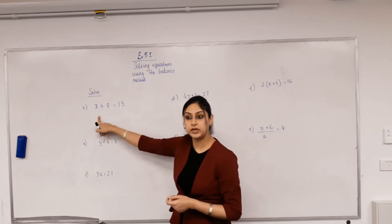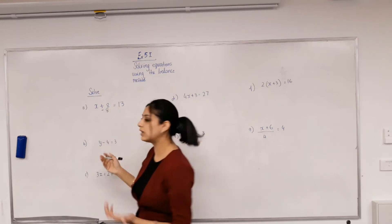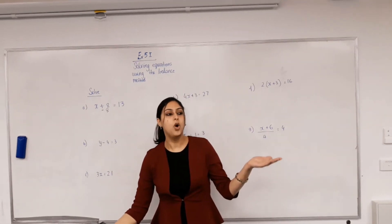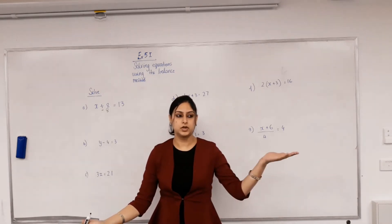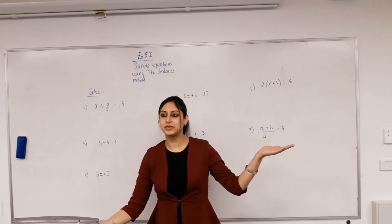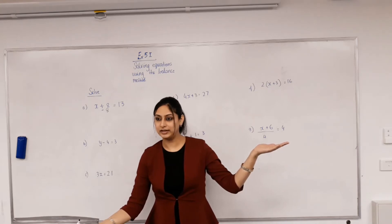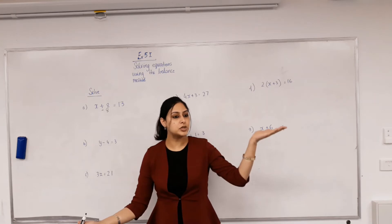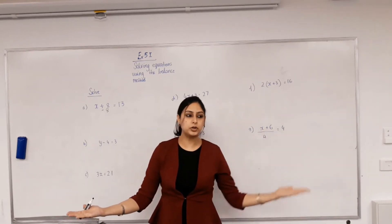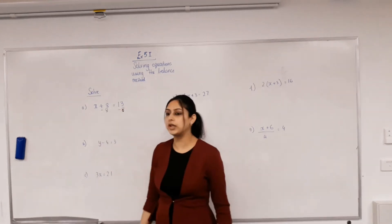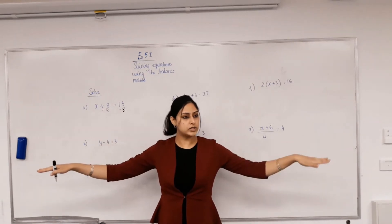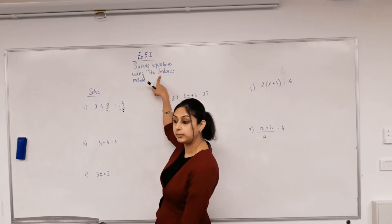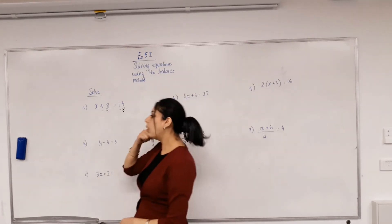This is an equation with an equal sign, so the left hand side equals the right hand side. If I minus 8 on one side, haven't I created an imbalance? So what should I do to the other side? Subtract the same number - subtract 8 from both sides so they're equal again. That is why it's called the balance method.